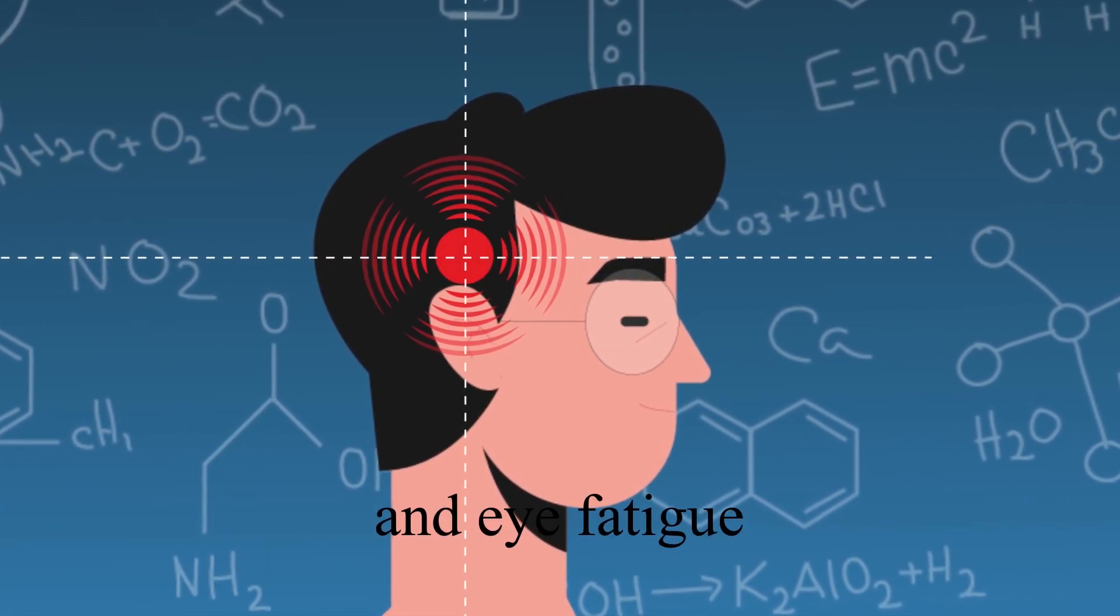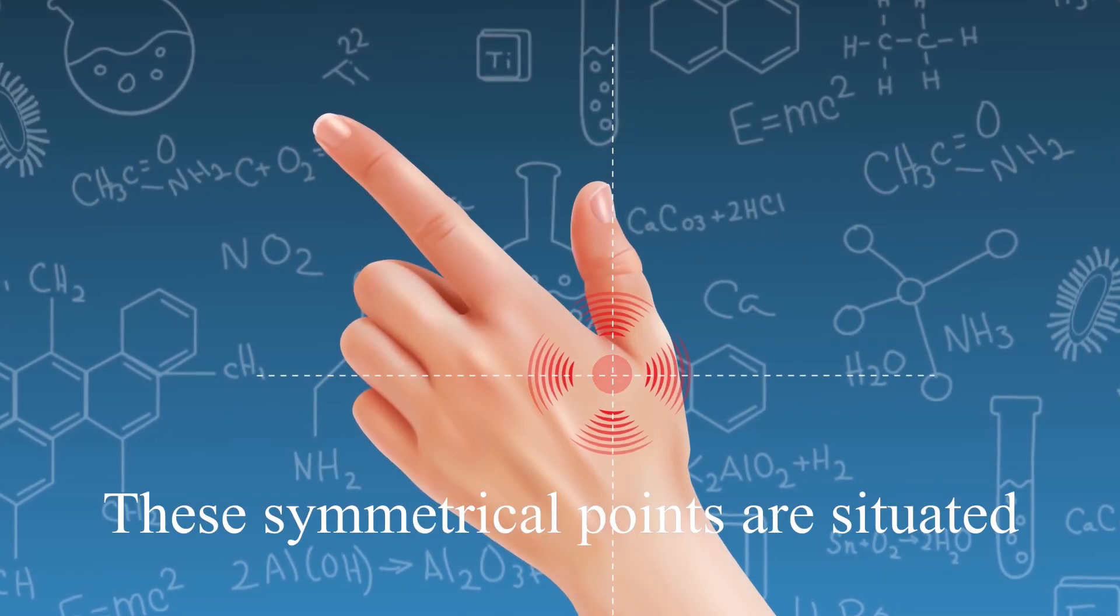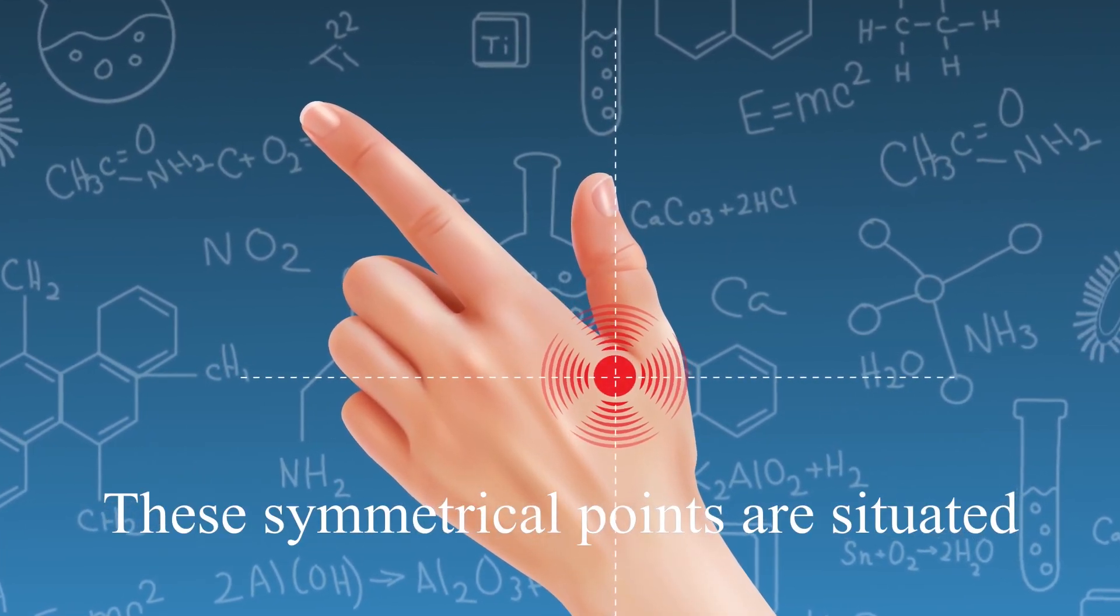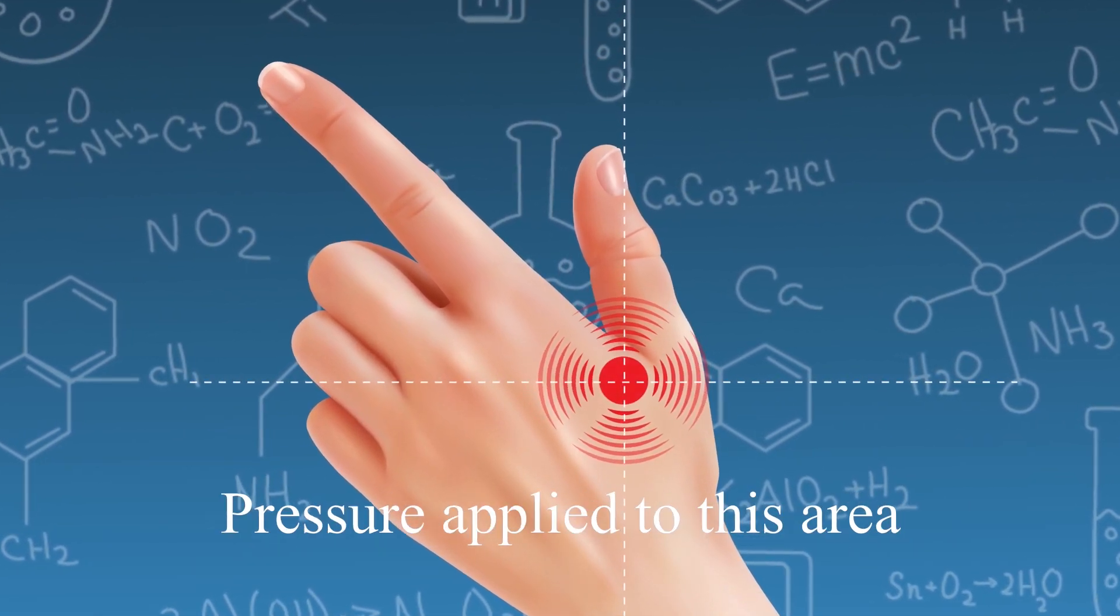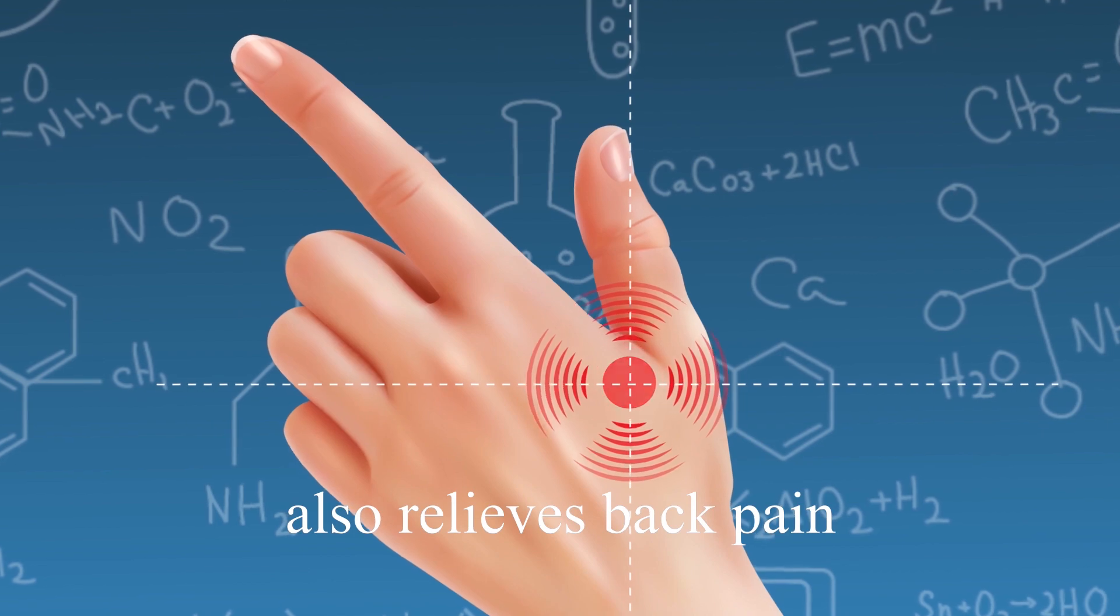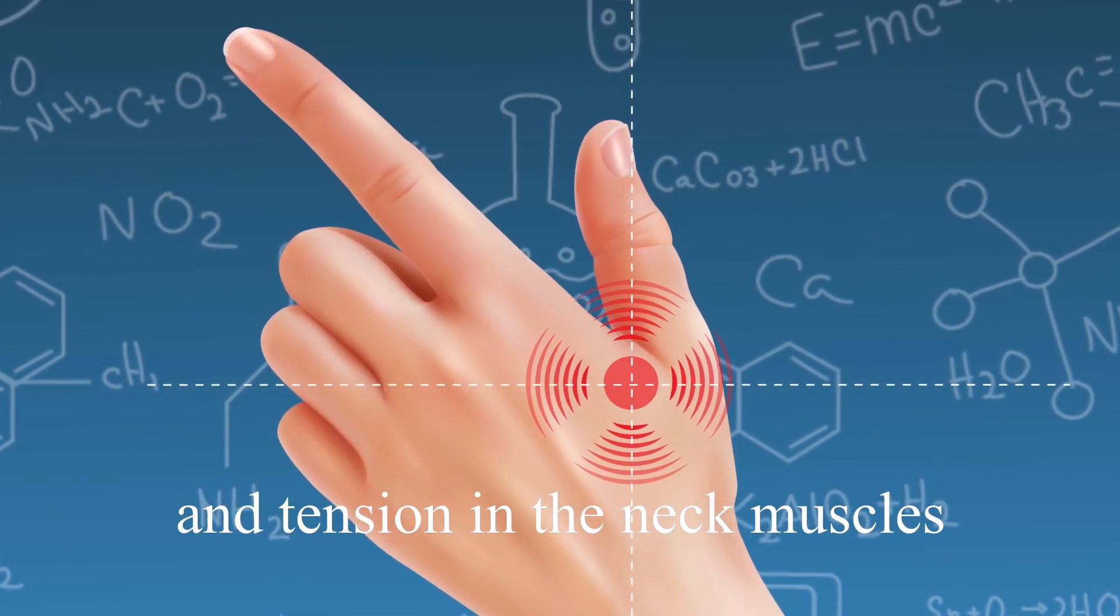Higu Point. These symmetrical points are situated on the back of the hand, between the thumb and forefinger. Pressure applied to this area also relieves back pain and tension in the neck muscles.